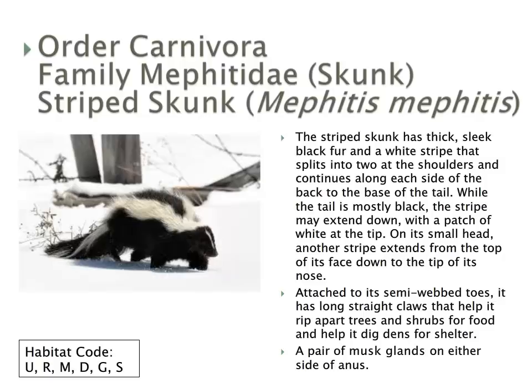Within the skunk family, we'll talk about the striped skunk, which is relatively common and certainly recognizable. The striped skunk is small with thick, sleek black fur. It has two white stripes starting at the back of the head, running parallel, diverging across the back and down through the tail. It has a very small head and semi-webbed toes good for digging and ripping apart trees. Most famously, it has musk glands which produce its unique odour when startled.